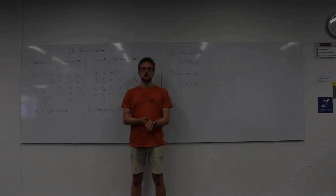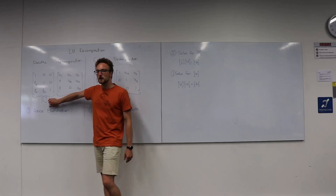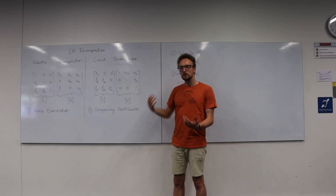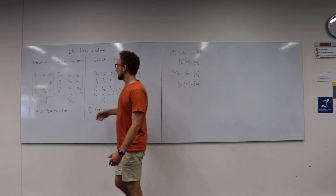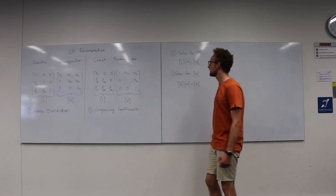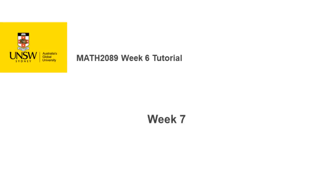To summarize LU decomposition: in the Doolittle decomposition method, the diagonals of the lower triangular matrix are all equal to 1, as opposed to the Crout decomposition method, where the diagonals in the upper triangular matrix are all 1. In Doolittle, we use Gaussian elimination to determine L and U; in Crout, we use comparing coefficients. After that the methods are the same: solve for D using L times D equals B, then solve for X using U times X equals D.